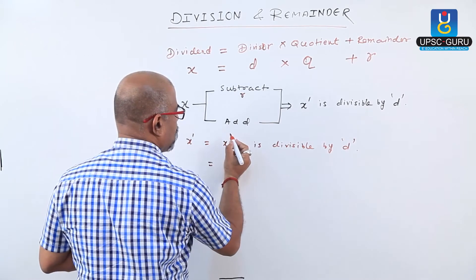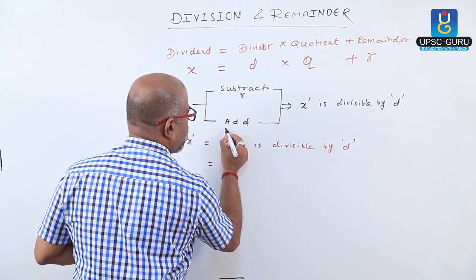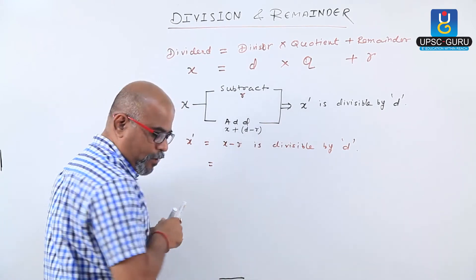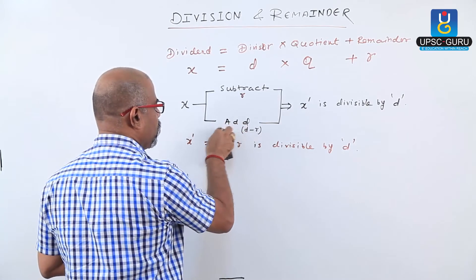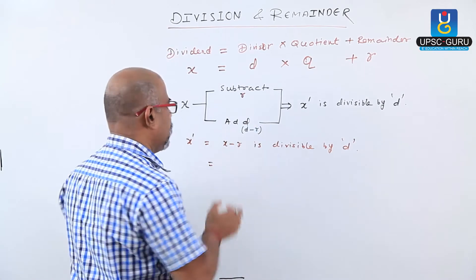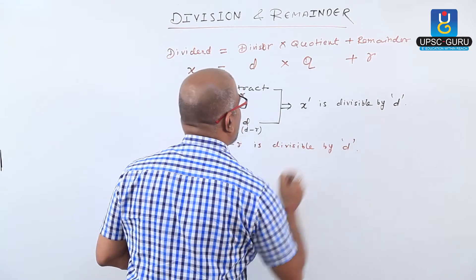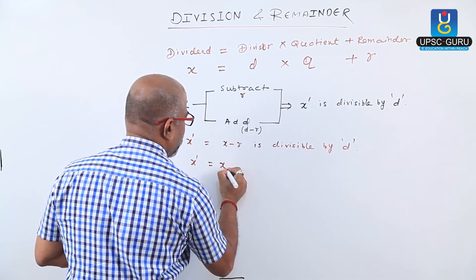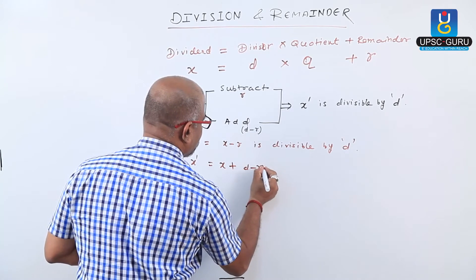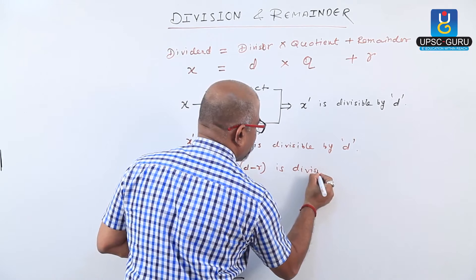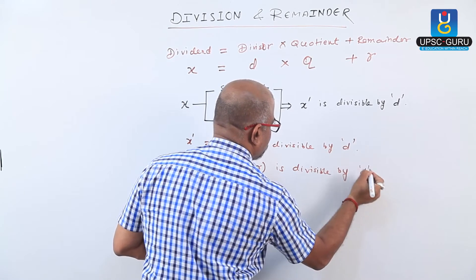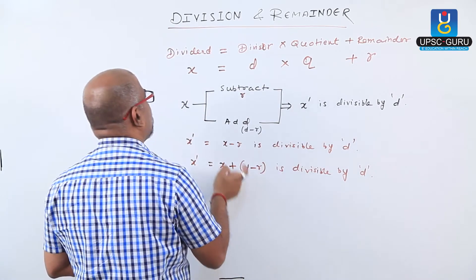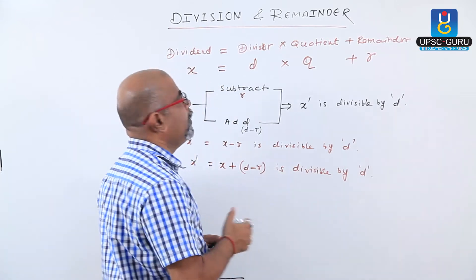Or, the number we have to add is D minus R — we add divisor minus remainder. When we add D minus R to X, the new number X dash equals X plus D minus R, which is divisible by the divisor D. That means, when we add divisor minus remainder to the dividend, the new number is divisible by D.